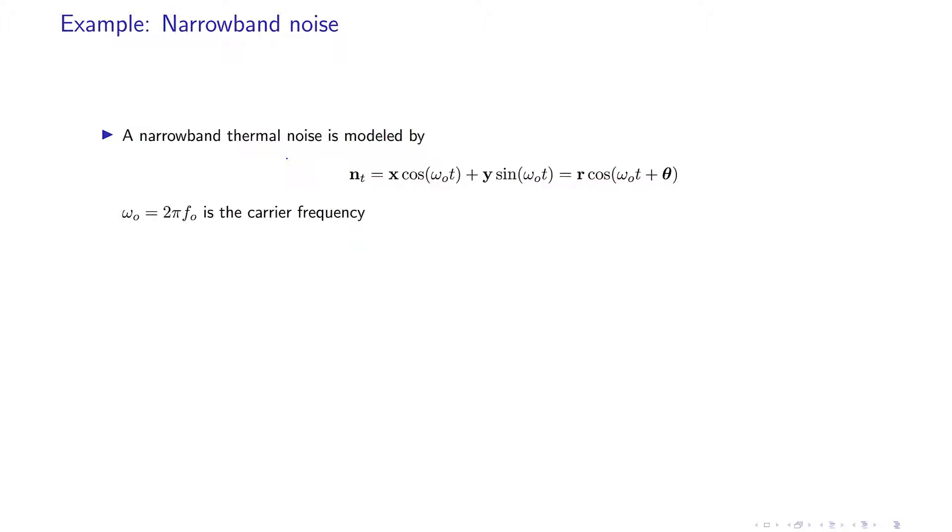Narrowband noise or narrowband thermal noise is modeled by a stochastic process which is a random variable at any given time, and this narrowband thermal noise has two random variables. It is equal to x times cosine of omega_0 t plus y times sine of omega_0 t.